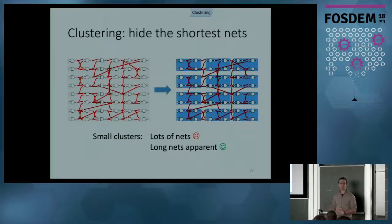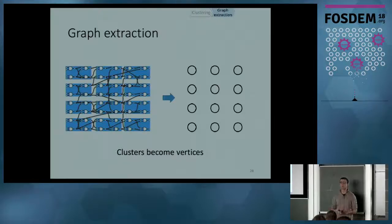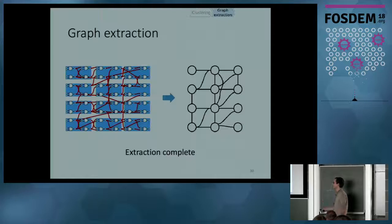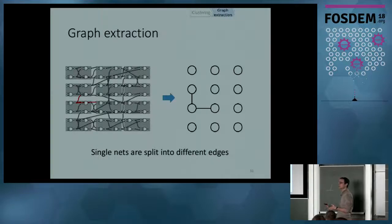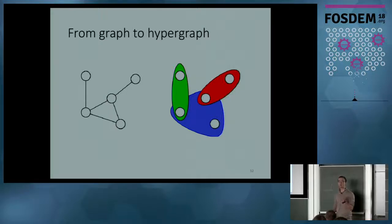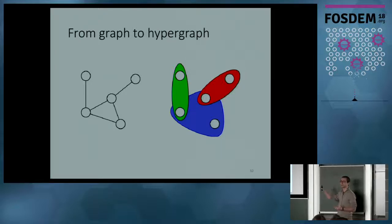Once the clustering grain is chosen, the next step is to extract the graph representing the design. Each cluster becomes one node — what we call a vertex of the graph — and each net connecting two clusters becomes one edge. However, some nets connect more than two clusters and would be extracted as two separate edges, but it's one net and should be one object. So the graph is too limited a definition to really represent the architecture of a design. We need to extend this using what we call hypergraphs, where instead of edges connecting only two nodes, you have hyperedges that connect several nodes all together using one object.